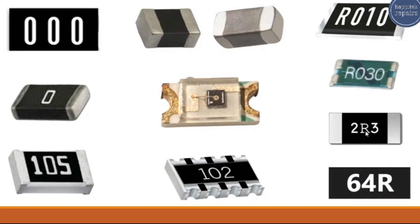When the 'R' is before or between numbers it means a decimal point. But for this kind of resistor, 'R' appearing after the number means ohms, so this is 64 ohms.